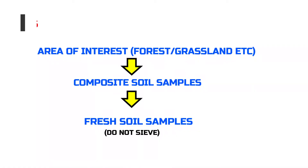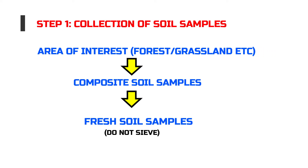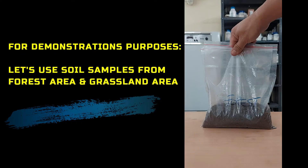To start this practical, the first step is to collect the soil samples. Composite soil samples collected from the field or area of interest are brought to the laboratory. For soil moisture content estimation, fresh soil samples should be used. The soil samples should not be sieved; however, large stones, pebbles, and roots should be removed. For demonstration purposes in this video, we will use soil samples collected from a forest area and a grassland area.